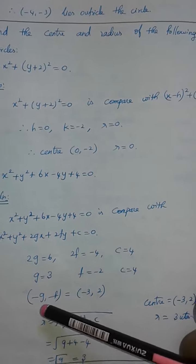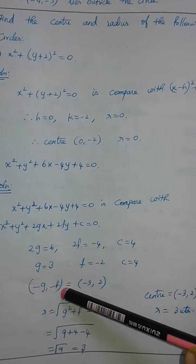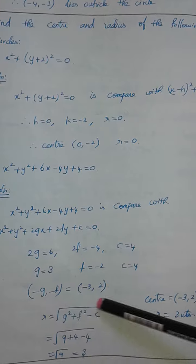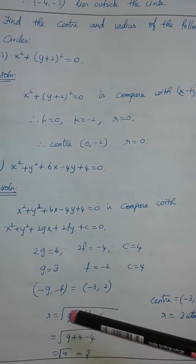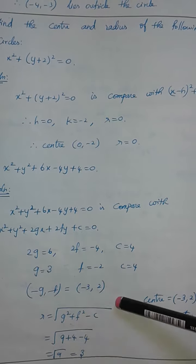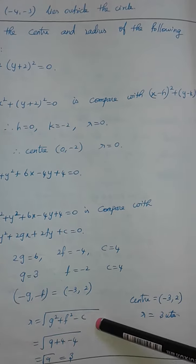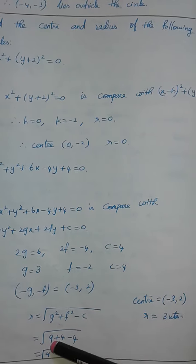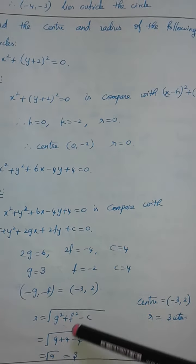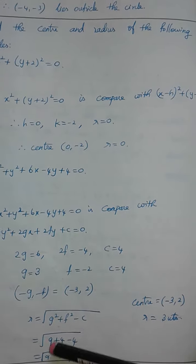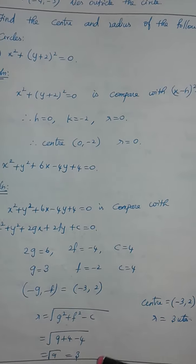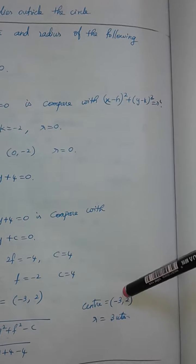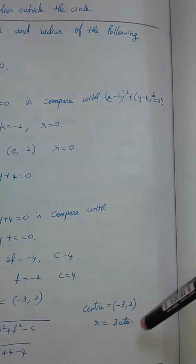The center formula is (minus g, minus f), so the center is (minus 3, 2). The radius formula is r equals root of g square plus f square minus c. g square is 3 square, which is 9. f square is 2 square, which is 4. c is equal to 4, so minus c is minus 4. Root of 9 plus 4 minus 4 is root 9, which is 3. So the radius is 3.